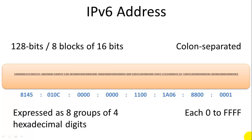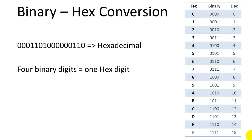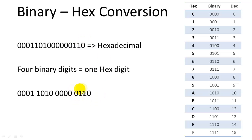A quick review on binary and hex conversion: you always want 4 binary digits to convert to a single hexadecimal digit — it converts very nicely. For example, breaking down a 16-bit number with spaces, 0110 is 6 hex, 0000 is 0 hex, and 1010 binary is A hex. The easy way is just to use a lookup table.